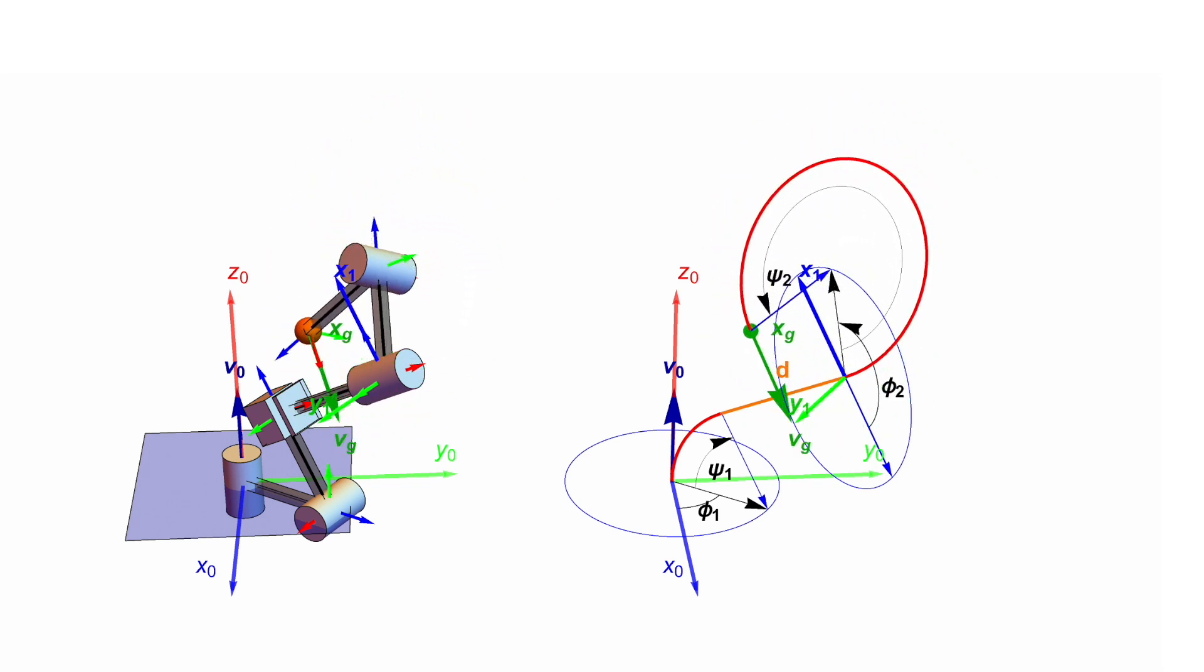The number of solutions varies over the configuration space. This plot shows the number of solutions while varying the goal x and z positions for a given goal y position and goal orientation. The number of solutions varies from 2 to 7 over this space.